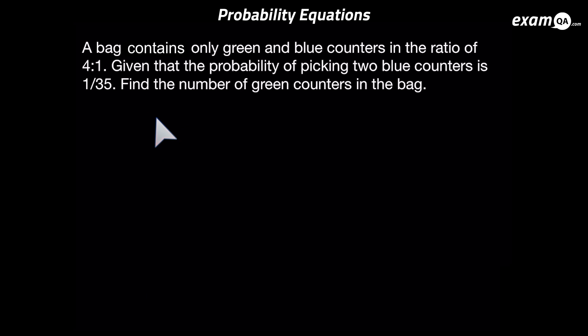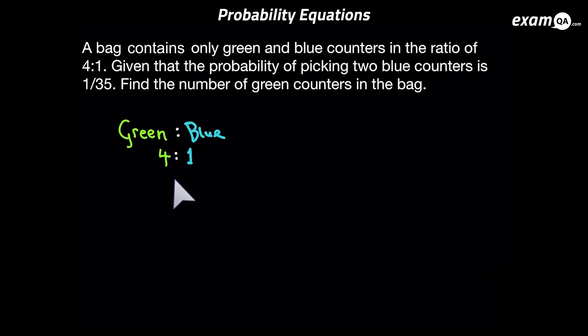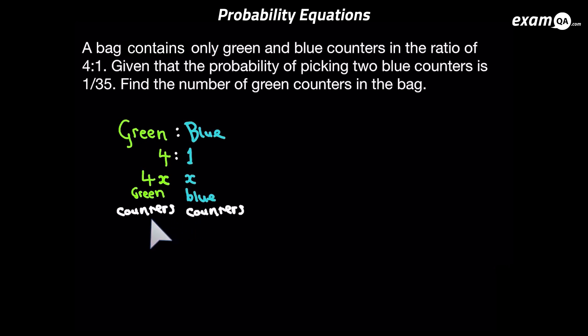Let's try another question. We're given that green and blue counters are in the ratio of 4 to 1, and we're told the probability of picking two blue counters. We need to work out how many green counters are in the bag. Again, the ratio as it is won't help us directly. So we say there's x amount of blue counters, which means there's 4x amount of green counters, because they're in the ratio of 4 to 1 — there's four times as many green counters as blue counters. Now we're dealing with amounts of counters, which we need to work out the probability of two blue counters.